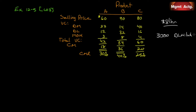Required, number one: compute the amount of contribution margin obtained per hour of labor time spent on each product. To find the contribution margin per hour, we need to know how many hours each product takes. We take the direct labor cost and divide by eight dollars per hour. For example, product A incurs twelve dollars of direct labor cost.